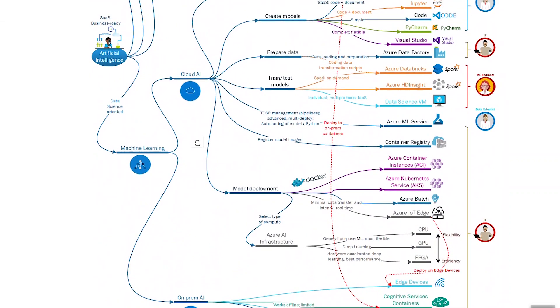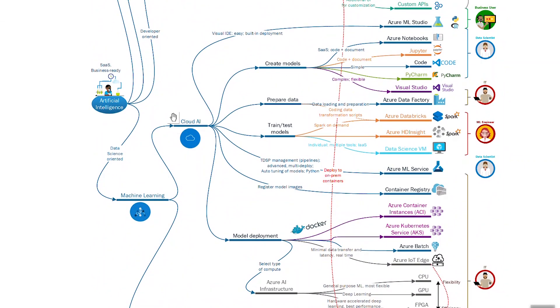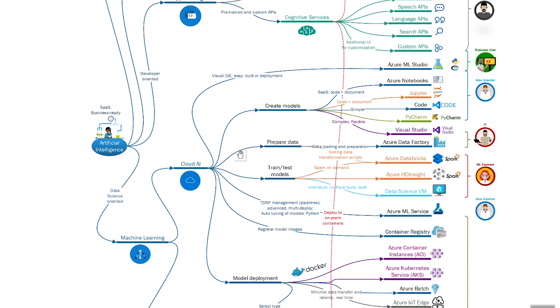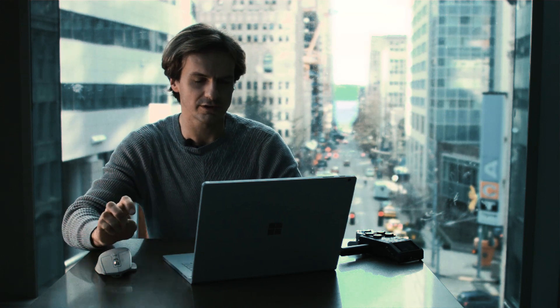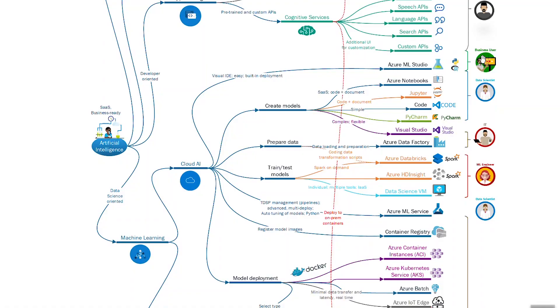Now let's talk about machine learning. First we'll focus on cloud AI and cloud machine learning. You probably already know Azure Machine Learning Studio, which is a visual interface environment where you can create and train models using pre-built machine learning algorithms. From the same environment you can publish models and create web APIs for your applications. This tool is mostly for business users, though developers and data scientists can use it for prototyping with Python or R. It's not very scalable, so when you need something more advanced you use the capabilities described in the next area.